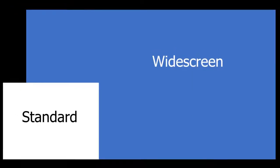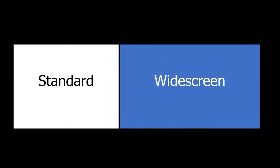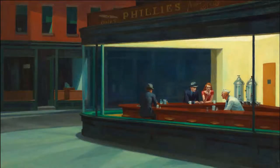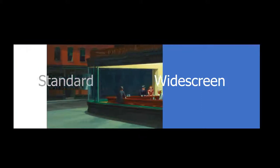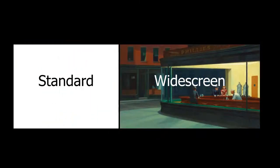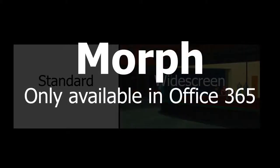Last year, a transition was added to Office 365 that does some incredible things. It lets you move an object, resize it, and very easily make the final result exactly what you want it to be. I can take a big picture, resize it all the way down to a standard screen, and then move it over to a widescreen at the same time that I make it wider. This is called the morph transition and it's only available in Office 365.